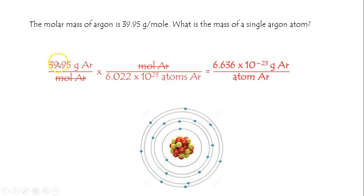So we can do a molar conversion. We have 39.95 grams per mole and that many atoms per mole. It gives us the grams per atom.